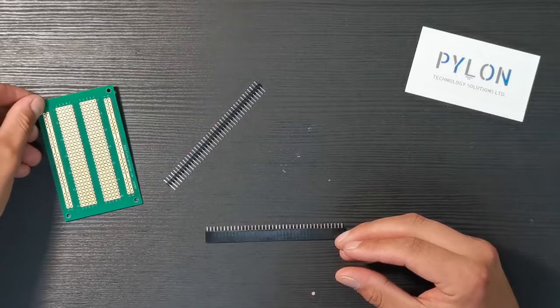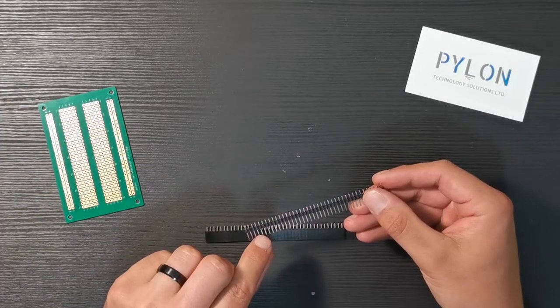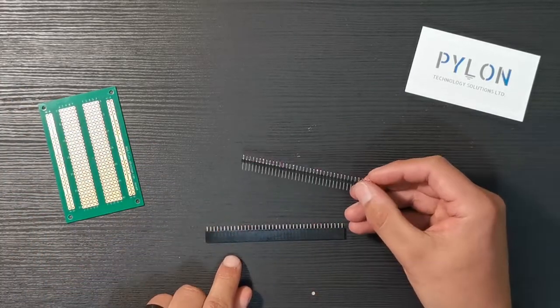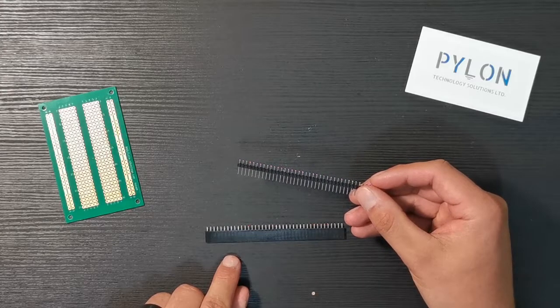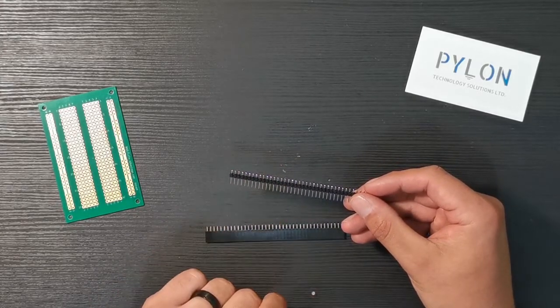Now note that the male header has one short and one long end while the female header only has a short end. Typically the short end is the one that gets soldered.